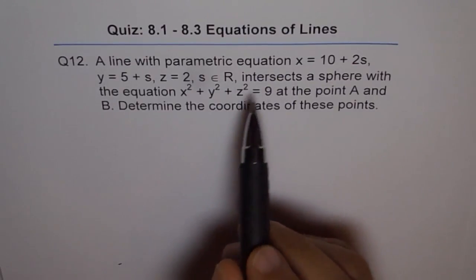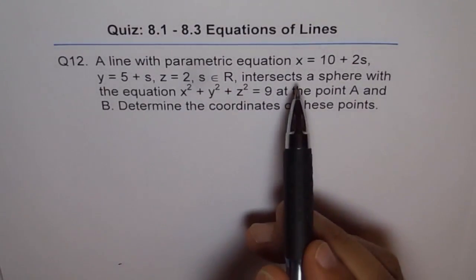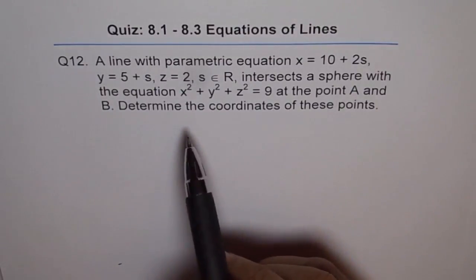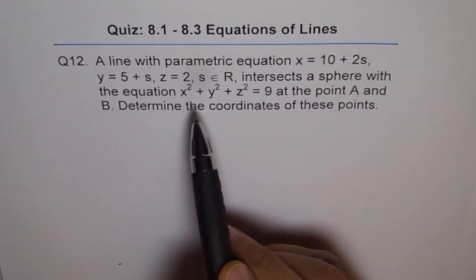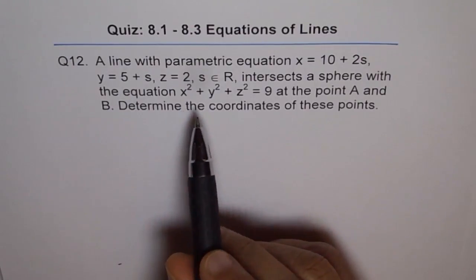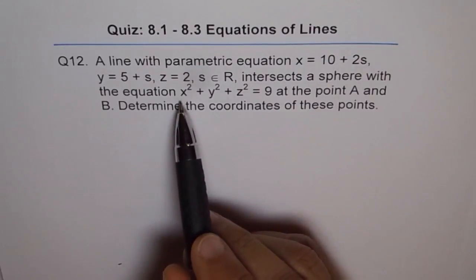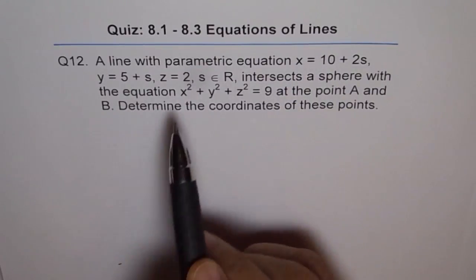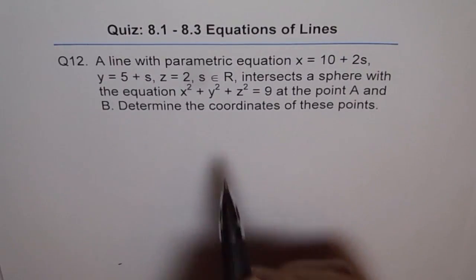When we say that this is the equation of the line and that is the equation of the sphere, then at point of intersection, all these x values should coincide. They have some common point. So what we can do is we can replace x with this value, y with the parametric values given to us.